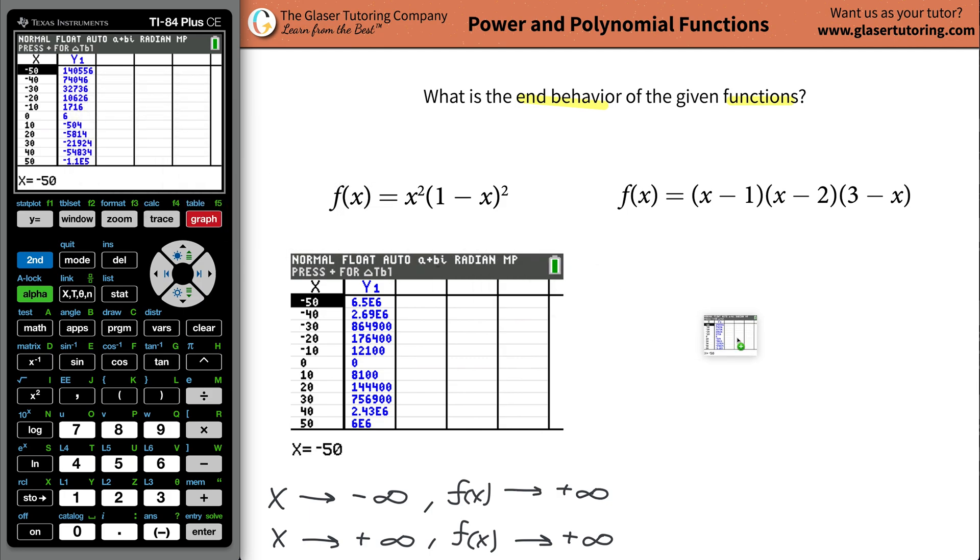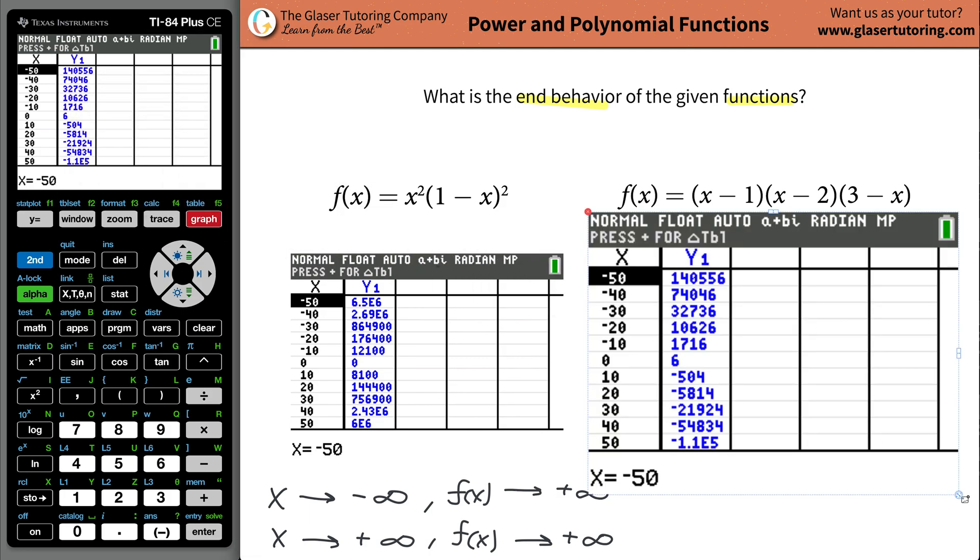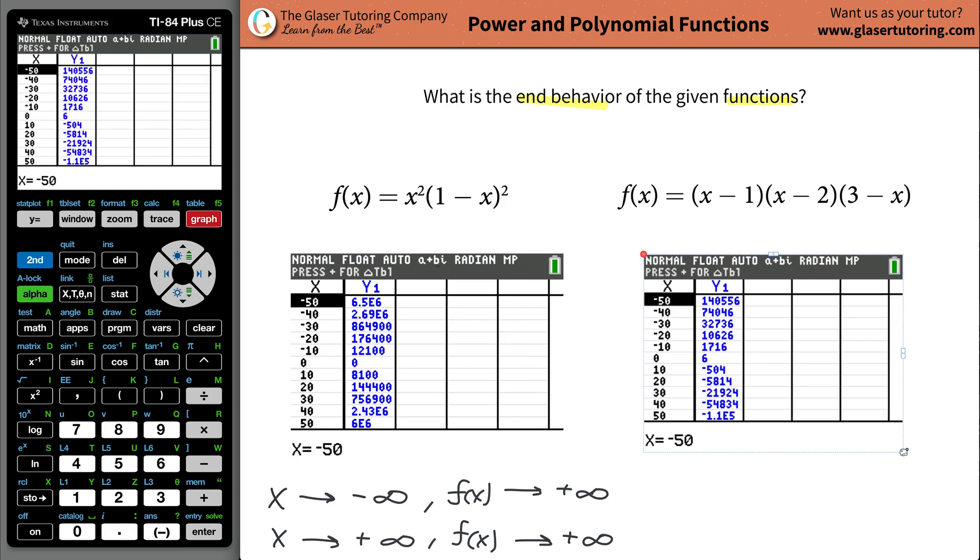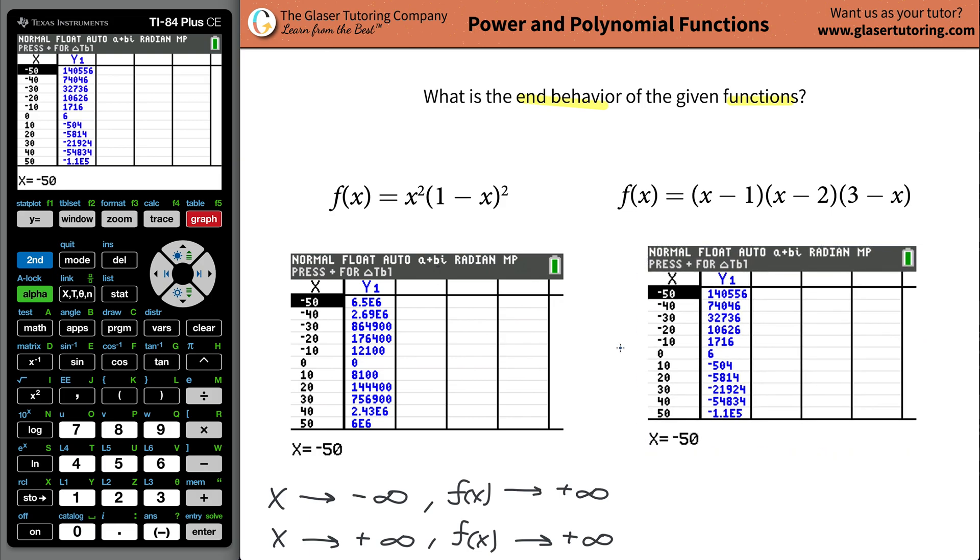So let's analyze it and see what's happening to X and Y. As X is becoming larger and larger in the negative direction, what's happening to the Y values? It looks like it's becoming larger and larger in the positive direction. So basically, we can say as X works out to be a really large negative number, in other words negative infinity, f(x) or the Y value of the function will go all the way to positive infinity. That's it.